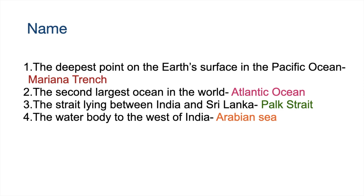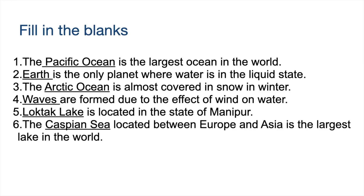Name: The deepest point on the earth's surface is the Mariana Trench in the Pacific Ocean. The second largest ocean in the world is the Atlantic Ocean. The strait lying between India and Sri Lanka is the Palk Strait. The water body to the west of India is the Arabian Sea. Fill in the blanks: The Pacific Ocean is the largest ocean in the world. Earth is the only planet where water is in the liquid state. The Arctic Ocean is almost covered in snow in winter. Waves are formed due to the effect of wind on water. Loktak Lake is situated in the state of Manipur. The Caspian Sea, located between Europe and Asia, is the largest lake in the world.